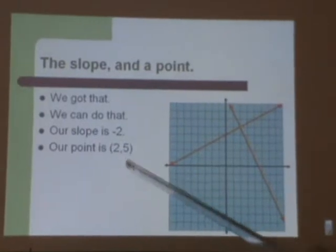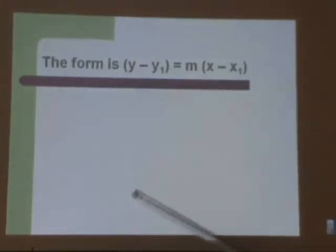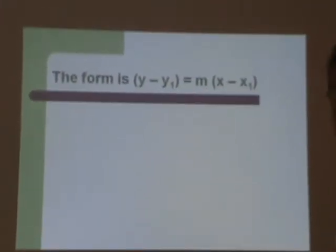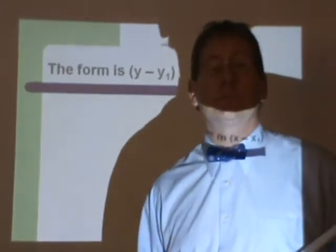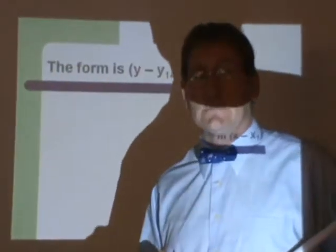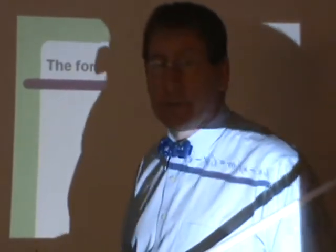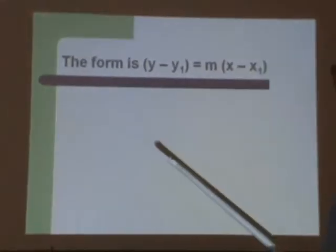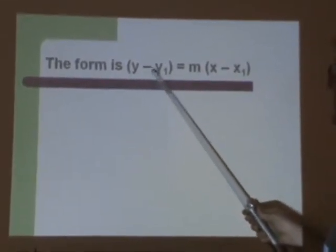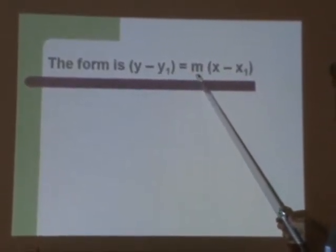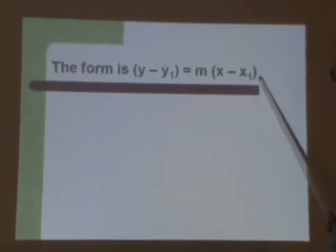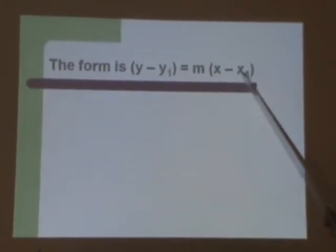The slope and a point is what we need to know. We plug them into the new form, and we'll be done, or almost done. Our slope is negative 2. Our point is 2 comma 5. Now here's the form itself. Don't get scared. I know it looks pretty nasty. It is pretty nasty, but it's not too hard to deal with.